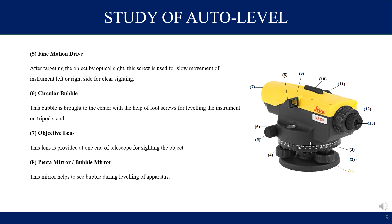Circular bubble: this bubble is brought to the center with the help of foot screws for leveling the instrument on the tripod stand. When the bubble comes to center, leveling is properly done. Objective lens: this lens is provided at one end of the telescope. Pentamirror or bubble mirror: this mirror is attached above the circular bubble and helps to see the bubble during leveling.